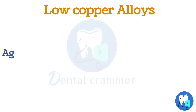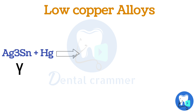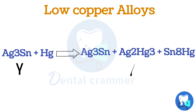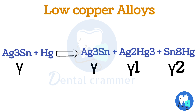Let's start with the setting reaction of low copper or conventional amalgam alloys. In low copper amalgam alloys, we have a silver and tin alloy which reacts with mercury. As a result, gamma 1 phase (silver and mercury), gamma 2 (tin and mercury), and the unreacted silver tin gamma phase are formed.